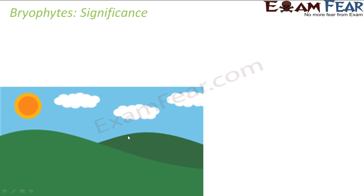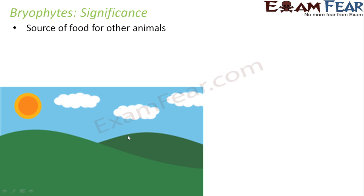Now let us look at the significance of bryophytes — why we study them separately and what role they play in our environment. First, they are a source of food for other animals such as birds and mammals. Second, they prevent soil erosion because these plants are capable of holding soil with their extensive carpet — over a vast stretch of land, so many bryophytes grow together that they hold the soil tightly and prevent erosion.